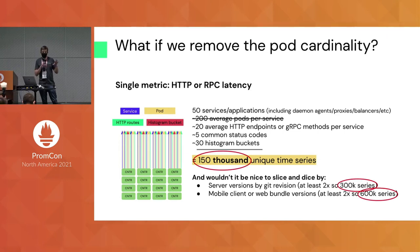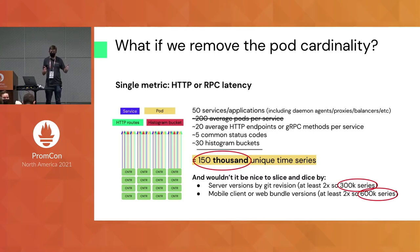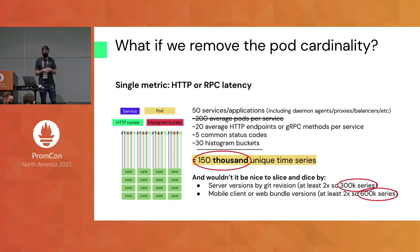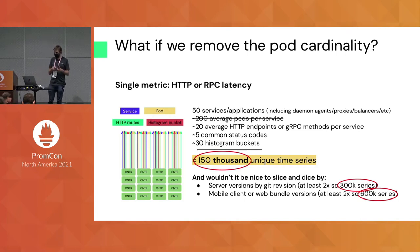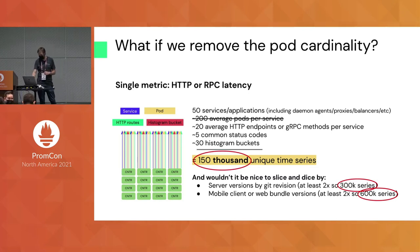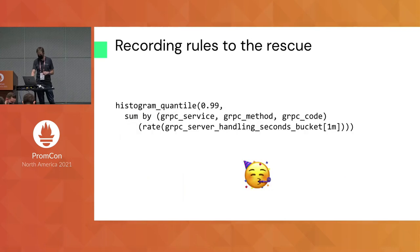If we remove the pod cardinality, this becomes much more manageable. We get down to 150,000 unique time series across all 50 microservices, and it becomes manageable in terms of how you think about keeping these around for a long time. If you multiply by two twice again — to get the active server versions and the mobile client versions on there — you're below one million unique time series.